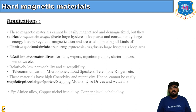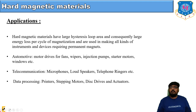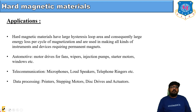Hard magnetic materials have large hysteresis loop area and consequently large energy loss per cycle of magnetization. They are used in making all kinds of instruments and devices requiring permanent magnets. Automotive applications include motor drives for fans, wipers, injection pumps, starter motors, and windows. In telecommunications, they are used in microphones, loudspeakers, and telephone ringers. They are also used in data processing in printers, stepper motors, disc drives, and actuators.